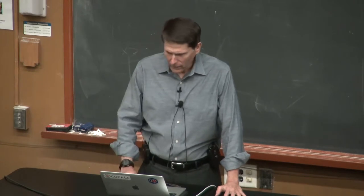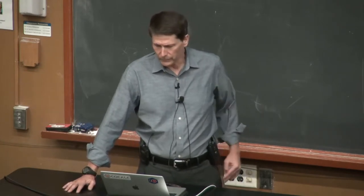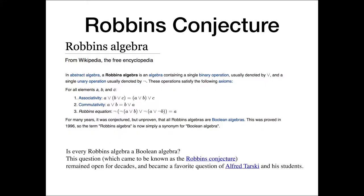So one great success story in this direction has been the Robbins conjecture. So Robbins algebra is an algebra, it's defined by a single binary operation or and a single unary operation of negation and it satisfies three axioms. It's associative, it's commutative and then it satisfies this third funny relation called the Robbins equation. So this, the Robbins algebra came up in connection with Boolean algebras and trying to find a minimal set of relations that would determine what a Boolean algebra is. And so for many years it was conjectured but unproven that all Robbins algebras are Boolean algebras. So that was the conjecture.